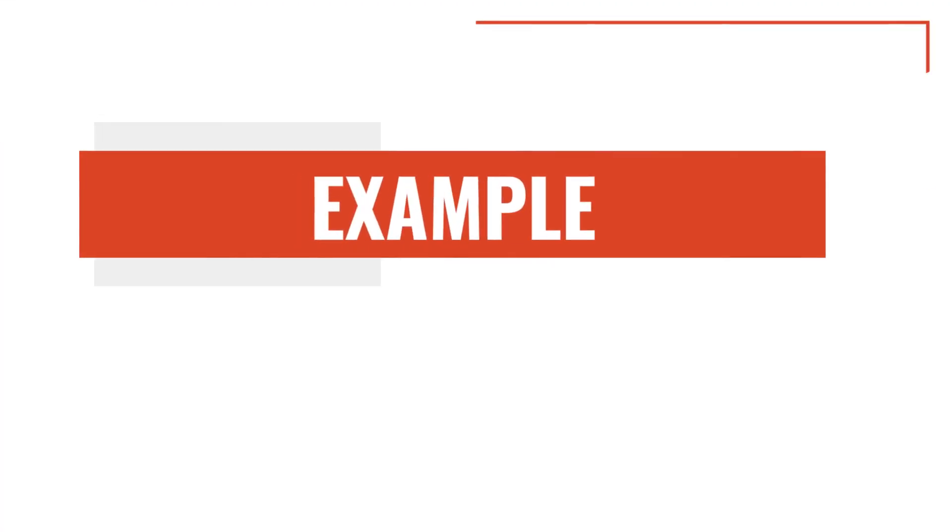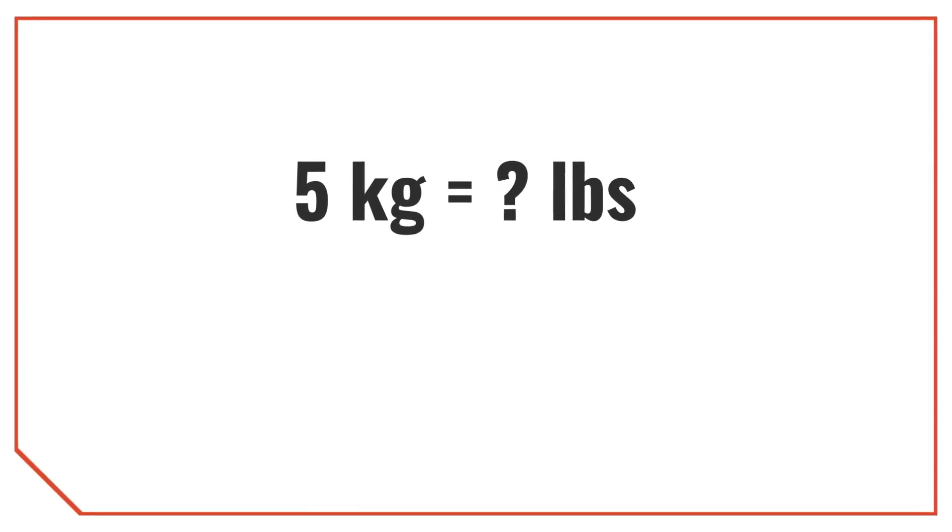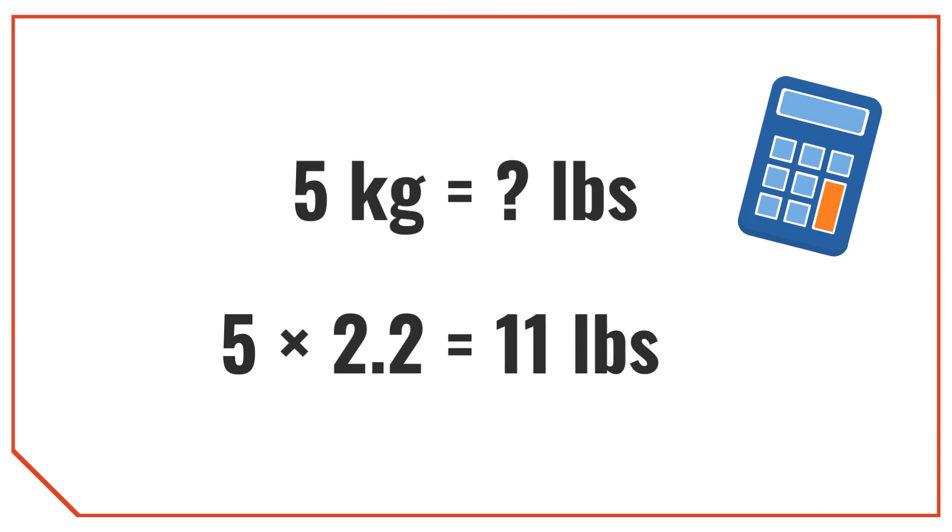Let's try some examples to demonstrate how this works. For our first example, let's convert 5 kilograms to pounds. To get the answer, multiply the length in kilograms by 2.2. So, 5 kilograms times 2.2 is equal to 11 pounds. Feel free to grab a calculator for these conversions if you need to.